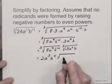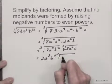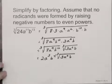So I have 2a cubed b to the 4th times the cube root of 3a squared b.